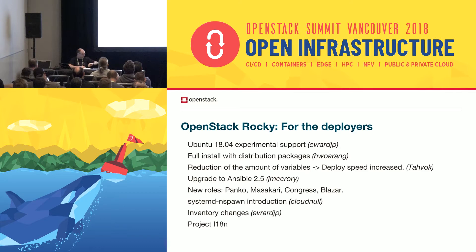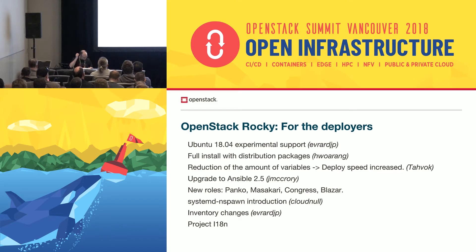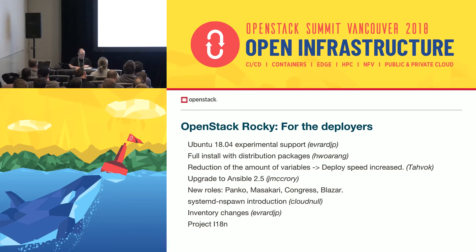For Rocky, we'll introduce Bionic — please contact me if you want to help. There is also massive work started by Marcos to install with distribution packages instead of sources — thanks Marcos for that. We are all working on the reduction of variables to make it faster to deploy; Albert has done quite a few patches on this, so thanks Albert. For upgrades, we are working on upgrading Ansible to 2.5 — it's still ongoing and Jamie is working on that, so you're free to help.